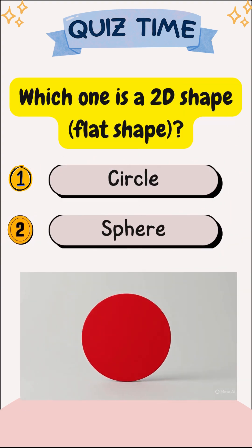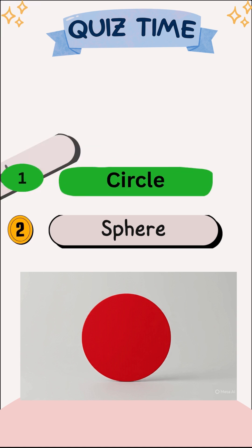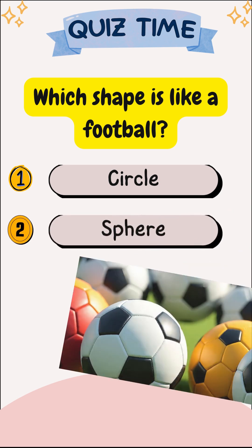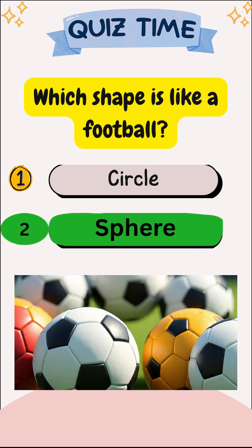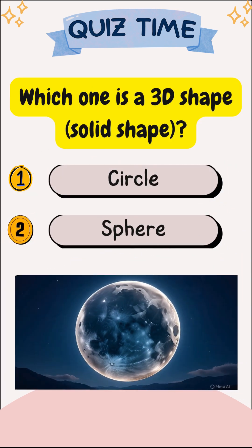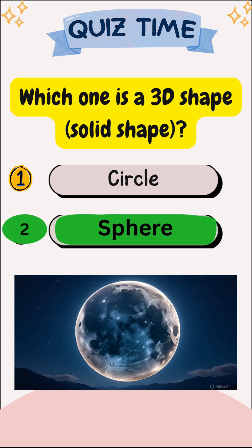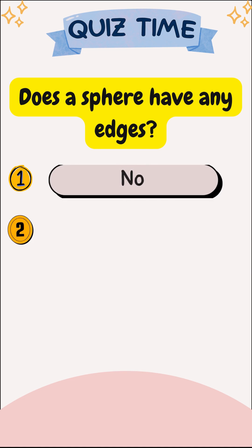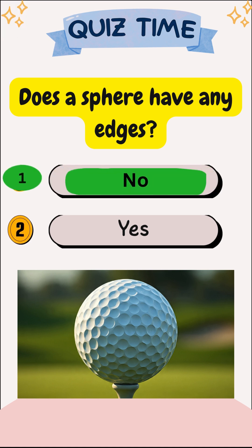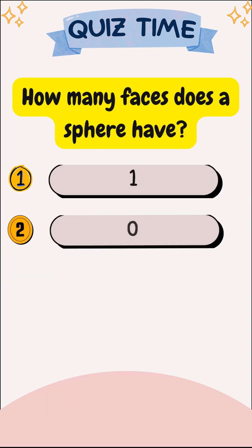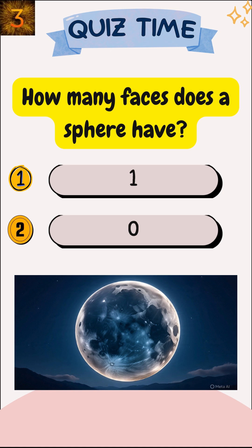Which one is a 2D shape or flat shape? Circle. Which shape is like a football? Sphere. Which one is a 3D shape or solid shape? Sphere. Does a sphere have any edges? No. How many faces does a sphere have? Zero.